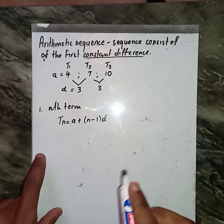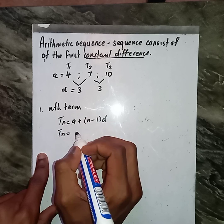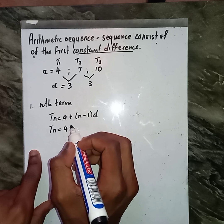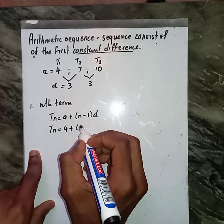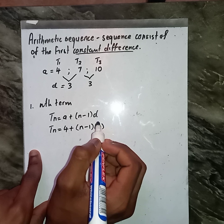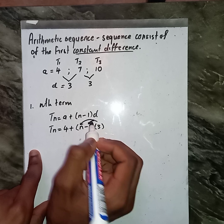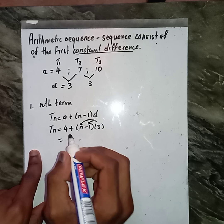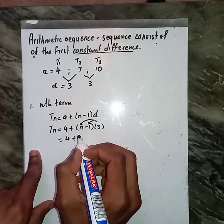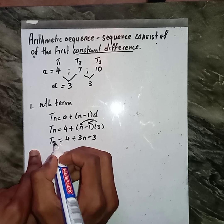At this point, we can then substitute everything. Let us substitute our a, which is 4. Let us also substitute our d, which is 3. At this point, we can simplify by saying 4 plus 3 multiplied by n, get 3n minus 3, which is Tn.